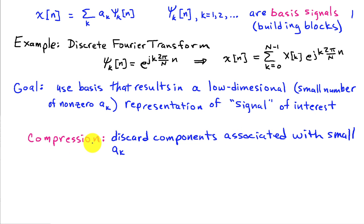The first is a compression problem, where by compression, I'm looking for an efficient way of storing x of n. And if I'm able to find some set of bases that involve only a small number of non-zero ak for the signals of interest, then as long as I know those bases and can build them, I can throw away the components associated with the ak's that are zero or small. And consequently, I can represent my signal using a relatively small number of coefficients. And from a compression standpoint, rather than storing x of n, I just store the ak.